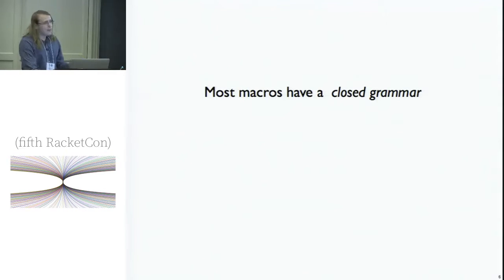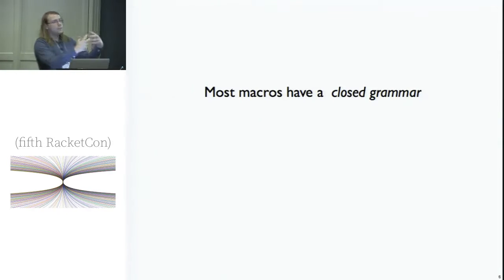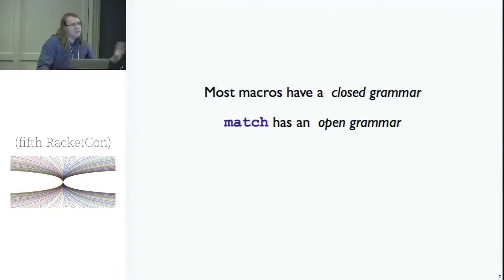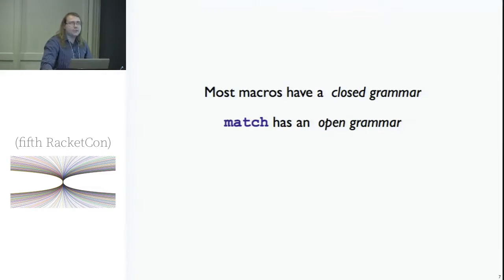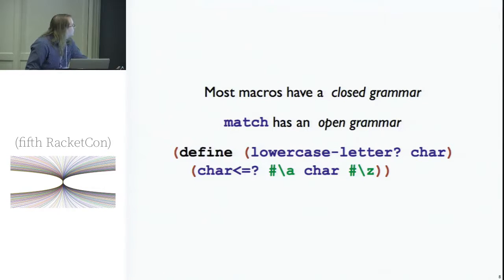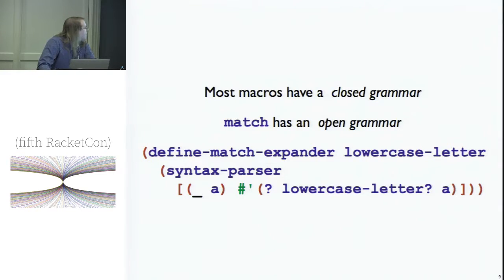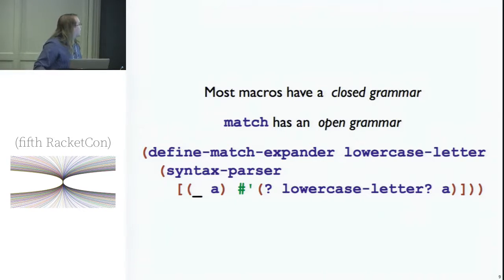Most macros have a closed grammar. When you make it, you say these are the things you're allowed to do — this is the syntax, that's it, that's the end all be all. But match has an open grammar. You can add new terms to match and new ways to define certain patterns in match. For instance, if I have a function that says this is true for lowercase letters, I can make a match expander that will only match lowercase letters from that.